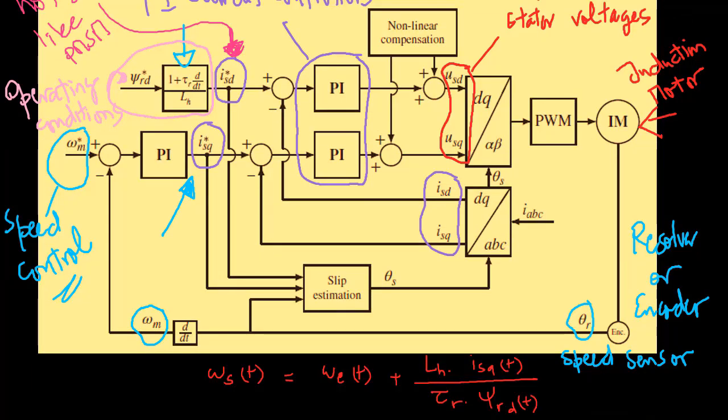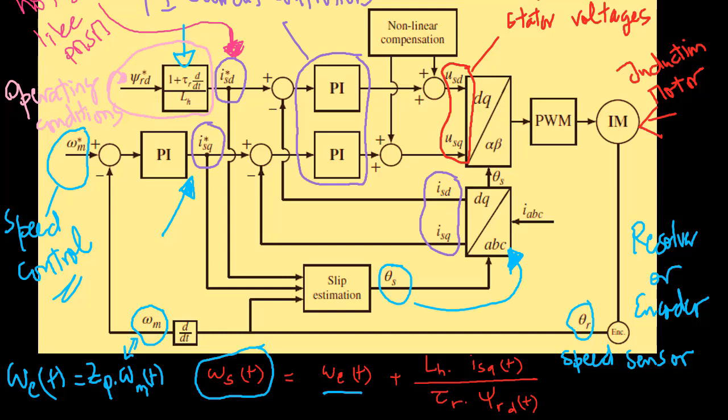Beyond that, ωs is not measured directly but is used in Park transformations to convert voltages and currents variables in the reference frame αβ to reference frame dq. Thus, the estimation of ωs is required as part of the control systems, and this is called the slip estimation.